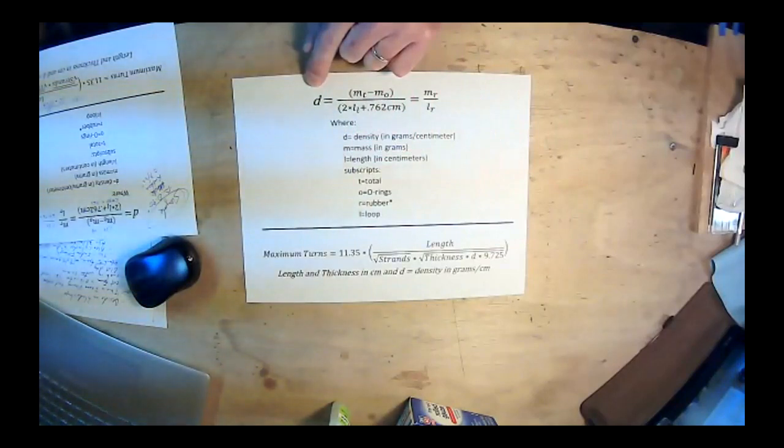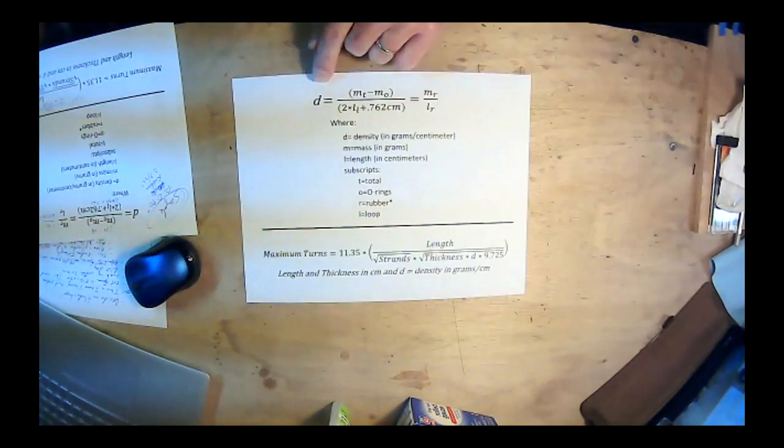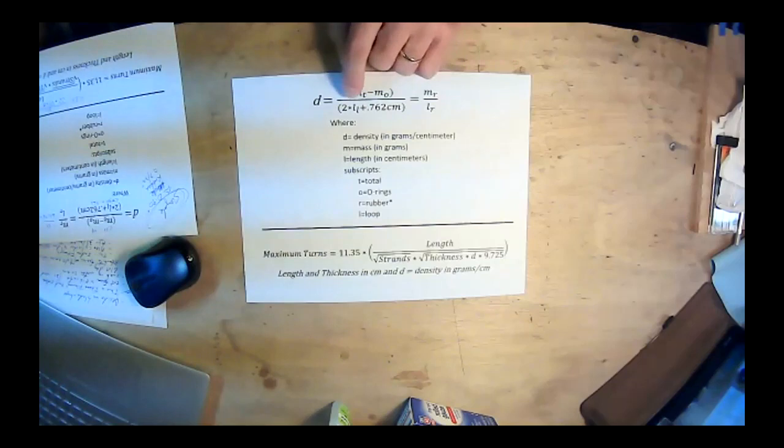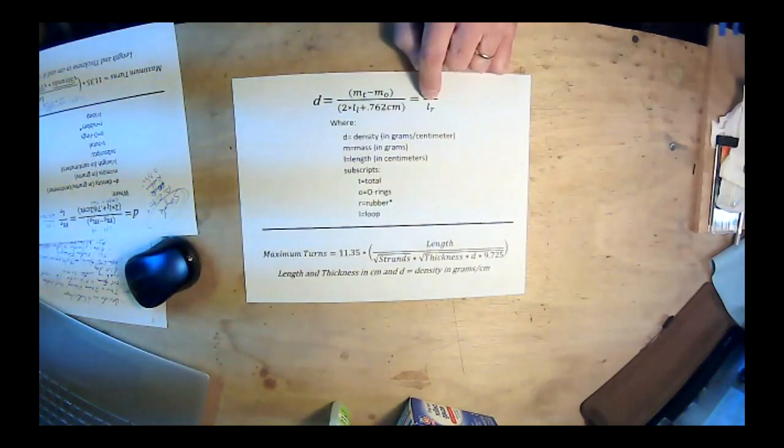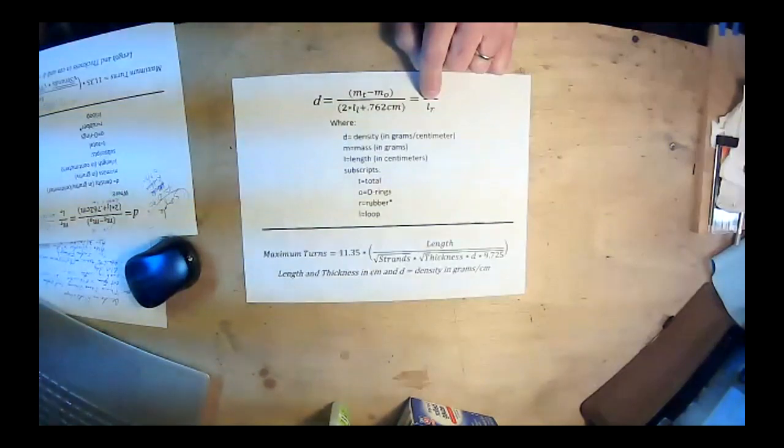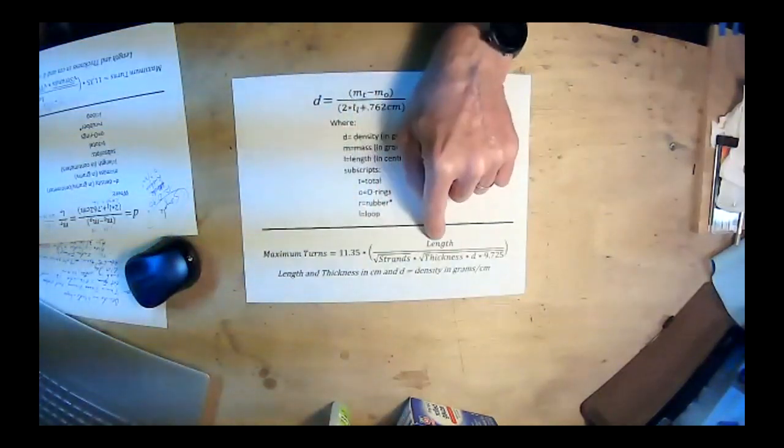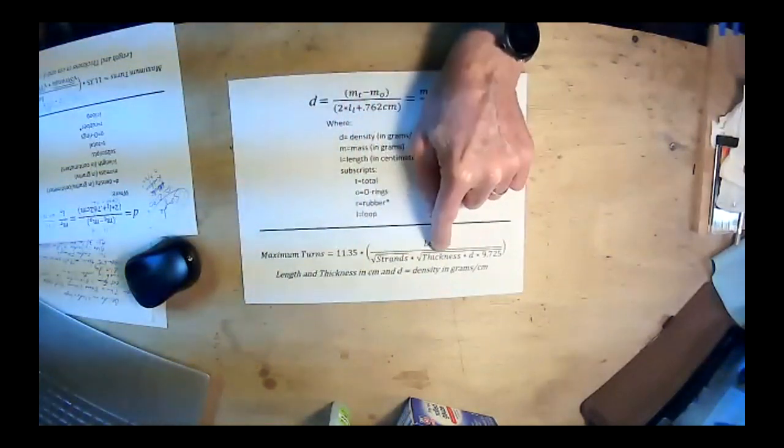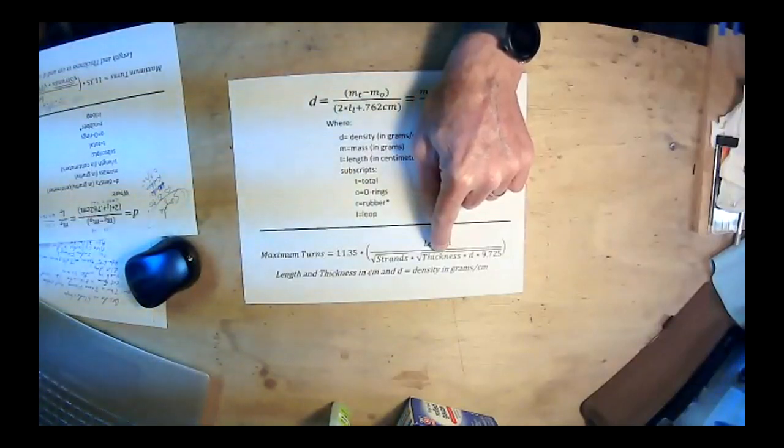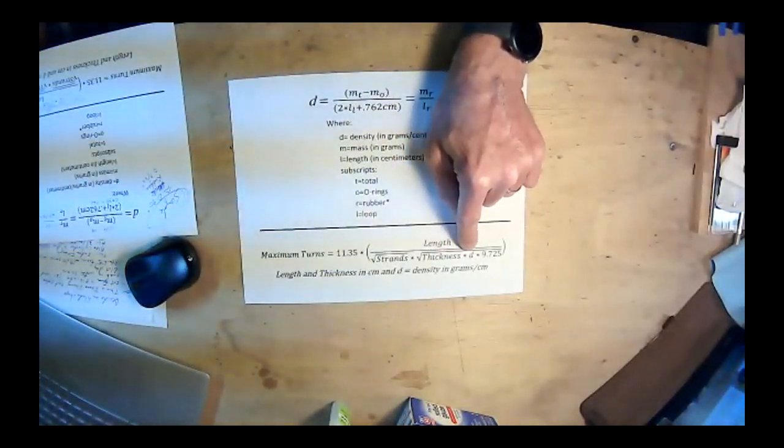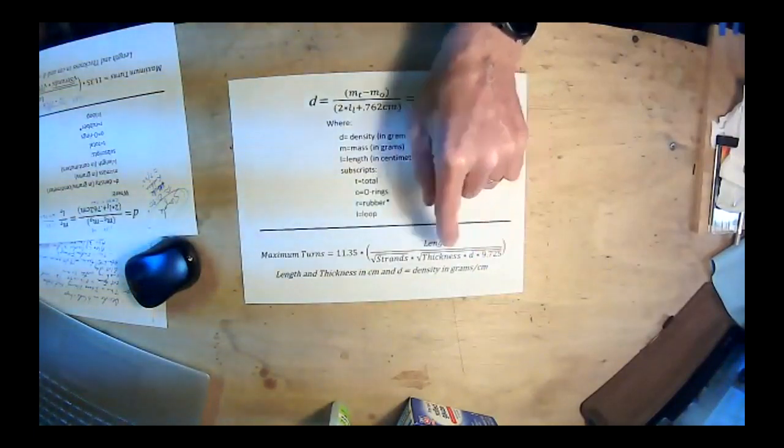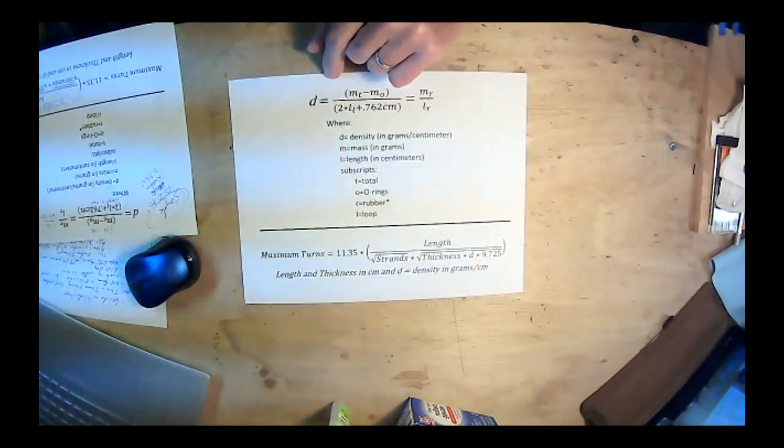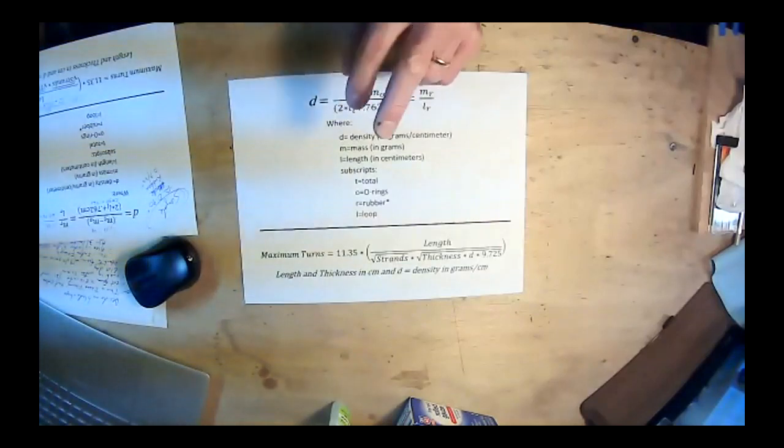So a sample calculation for this would be if you had a 1.5 gram motor that had two black rubber O-rings on it. The black rubber O-rings are 0.08 grams typically. You can weigh them to double check that. So then this is going to be 1.42 grams of rubber and 30 centimeter rubber motor loop plus 0.762 centimeters would be 30.762 total amount of rubber. That would give a density of 0.0234 grams per centimeter. So then this would be 30 divided by the square root of 2 times 0.1 centimeters, because I'm working in centimeters, and times the density of 0.0234 grams per centimeter times 9.725. And that example will give you a rubber band that'll take 1,500, a rubber motor that'll take 1,597 turns theoretically before it breaks.